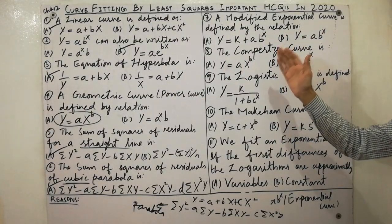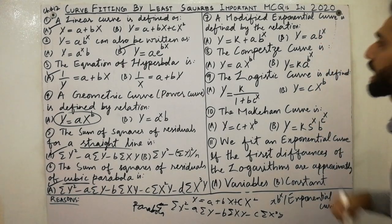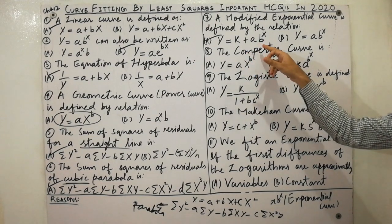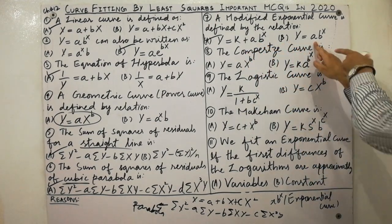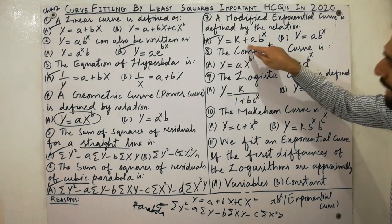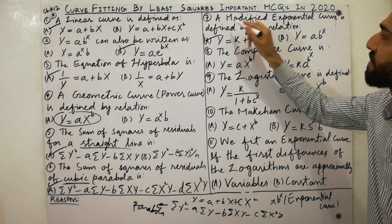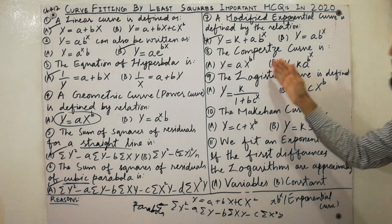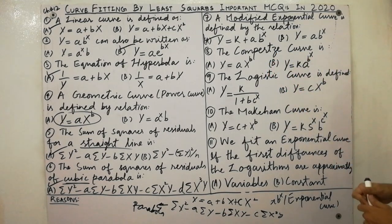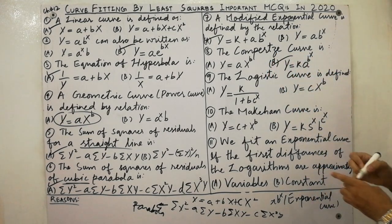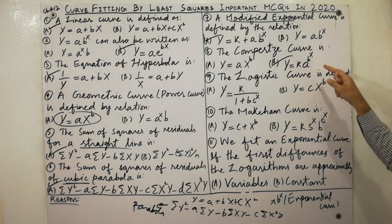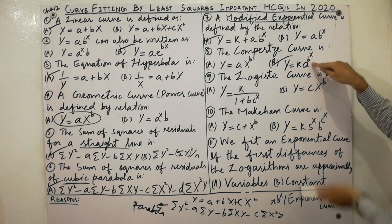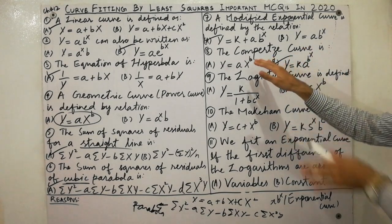Moving to the next points: a modified exponential curve is defined by y is equal to k plus a·b raised to the power x. Next, the Gompertz curve is defined by y is equal to k·a raised to the power b, where b is raised to the power x — this is called the Gompertz curve.